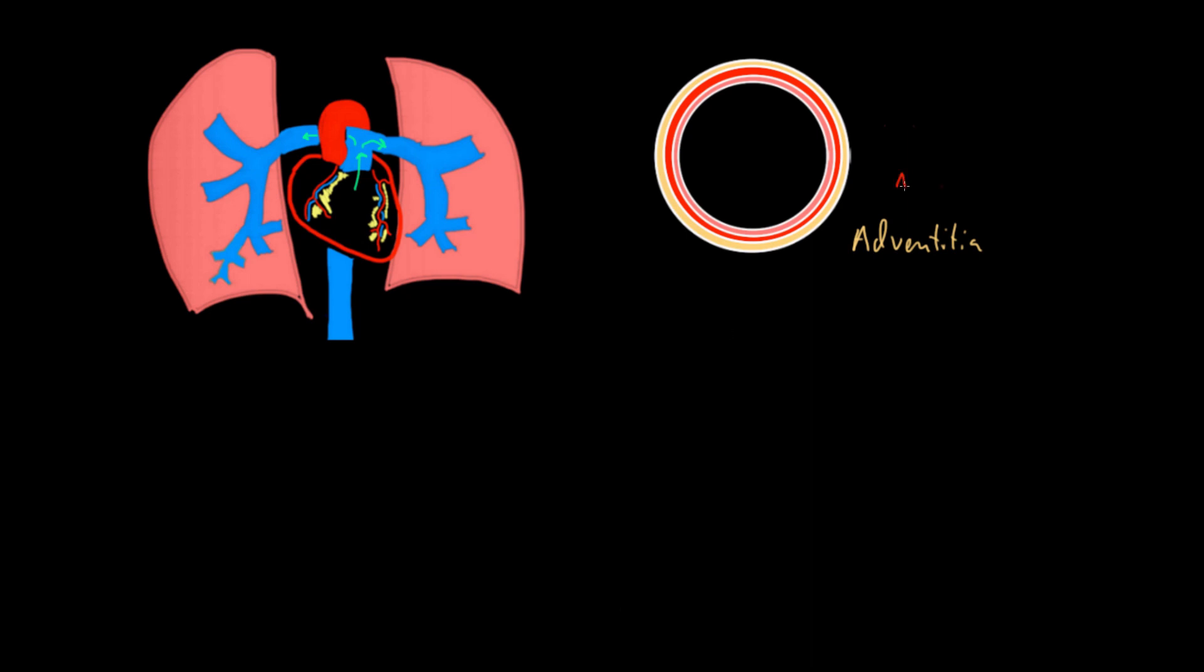The middle layer of vessels is called the tunica media. Media sounds like middle so that should be easy to remember. The tunica media contains smooth muscle which allows the diameter of this vessel to change. All of that smooth muscle that allows the diameter to change is present in the tunica media.